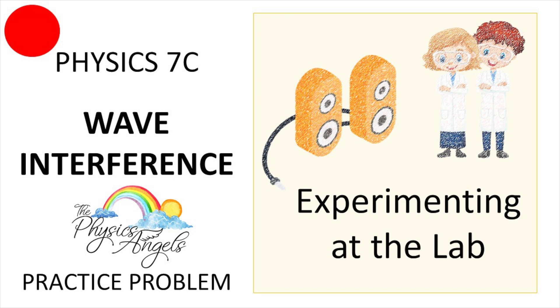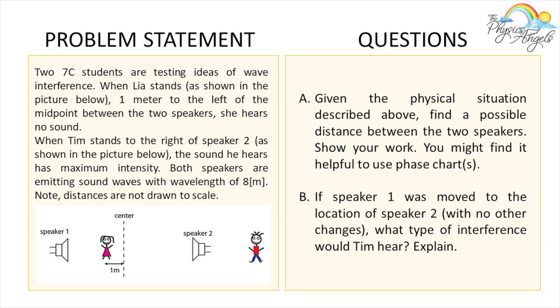So the problem that we're going to be answering today is two 7C students are testing ideas of wave interference. When Leah stands one meter to the left of the midpoint between the two speakers, she hears no sound. When Tim stands to the right of speaker 2, as shown in the picture below, the sound he hears has maximum intensity. Okay, so Leah hears nothing, Tim hears everything. Both speakers are emitting sound waves with wavelength of 8 meters. Note, distances are not drawn to scale.